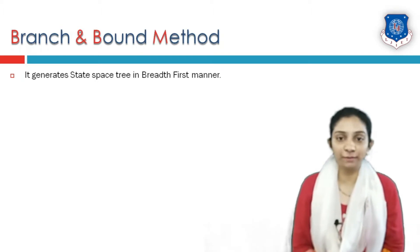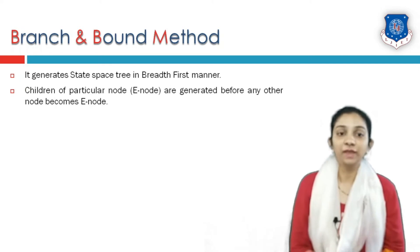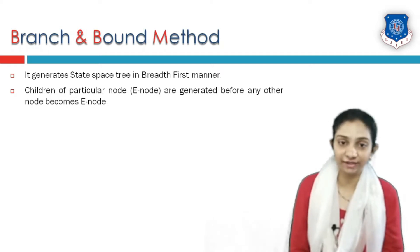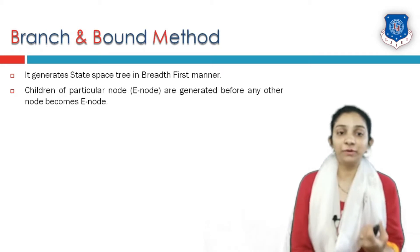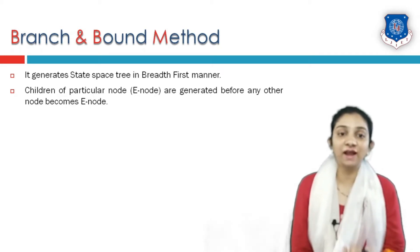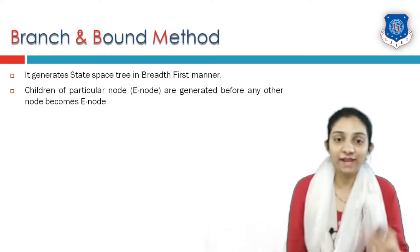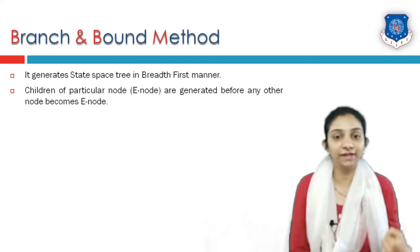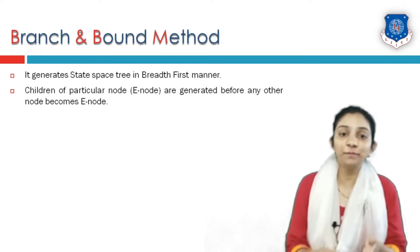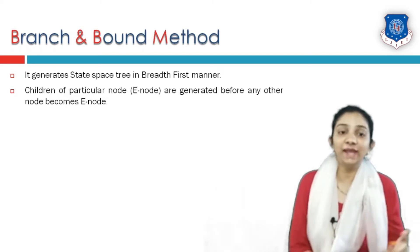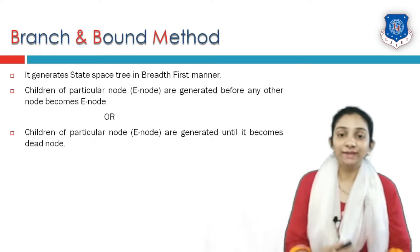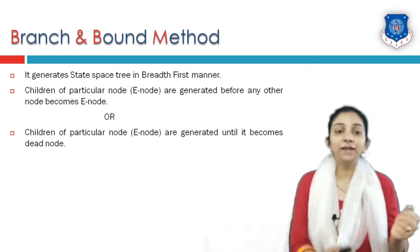This is how branch and bound method is different from backtracking. In branch and bound, the E node is a node whose children are currently being generated. For a particular E node, all children are generated before it becomes a dead end. That means if possible children are not yet generated, we cannot select another node and start generating its children. Children of a particular E node are generated until it becomes a dead end.